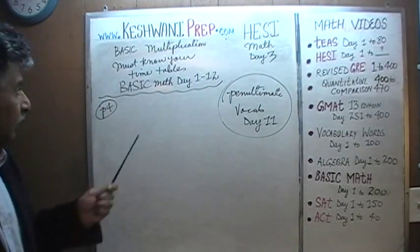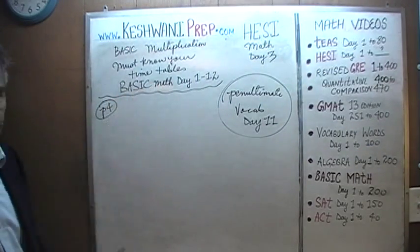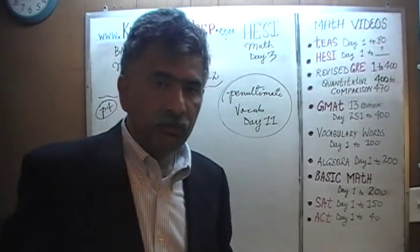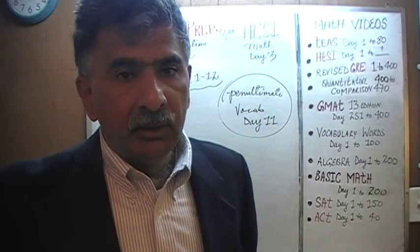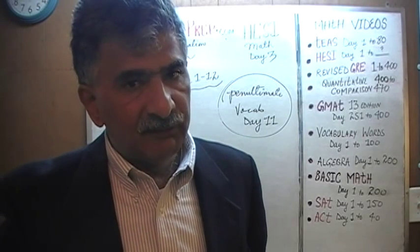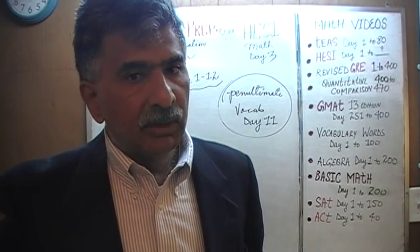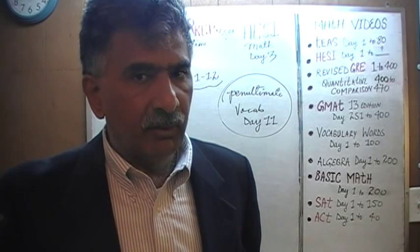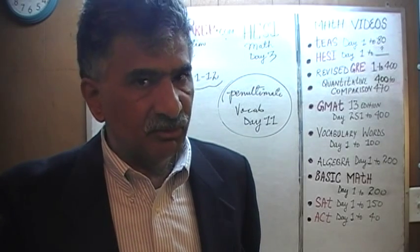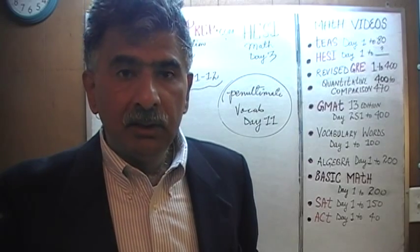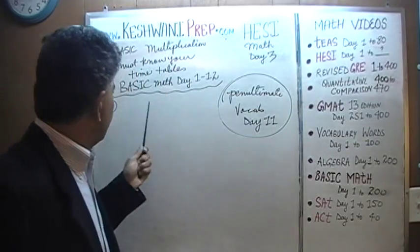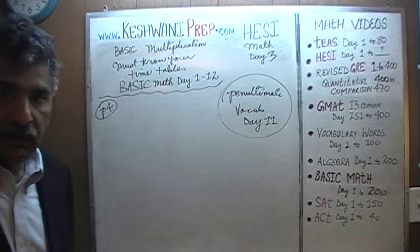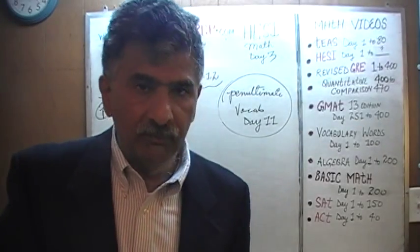The topic that we are dealing with is basic multiplication. Now before we get going and before we start solving the problems, I want to remind you that in order for you to be efficient at this exam and get a decent score, there are some things you have to know by heart. One of those basic fundamental things is your timetables. You must know your timetables from 1 through 12 — not 1 through 10, but 1 through 12.